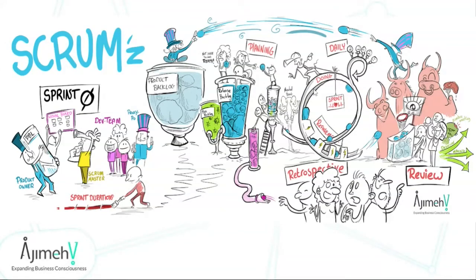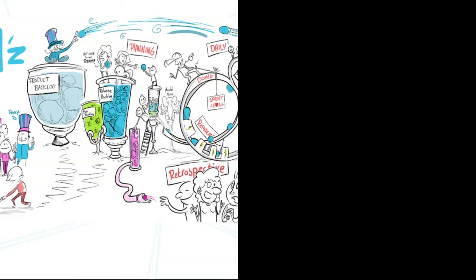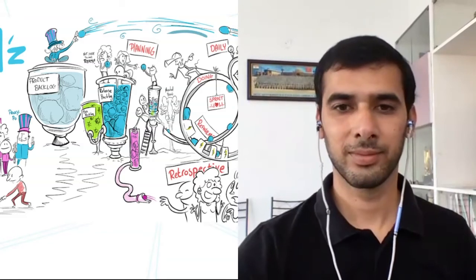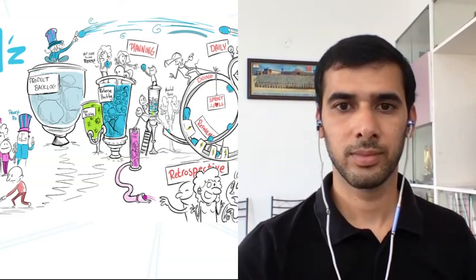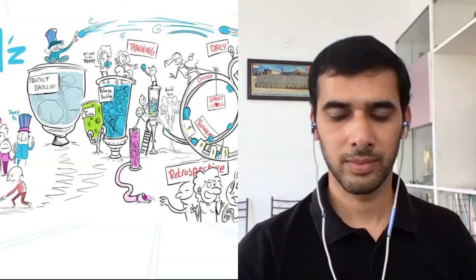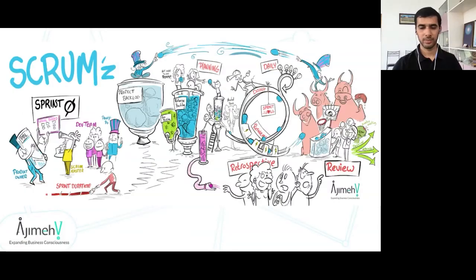The sprint backlog is the commitment for the incoming sprint. We plan sprint number 42, for example, at the end of sprint number 41. We found that people are much more efficient arriving Monday morning already knowing what to do in the sprint, rather than arriving Monday morning and starting to plan.